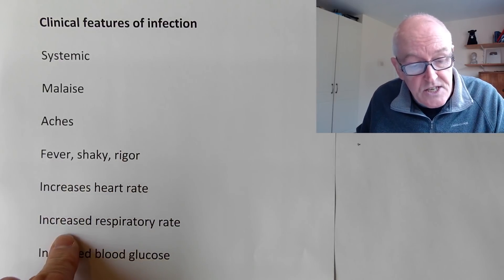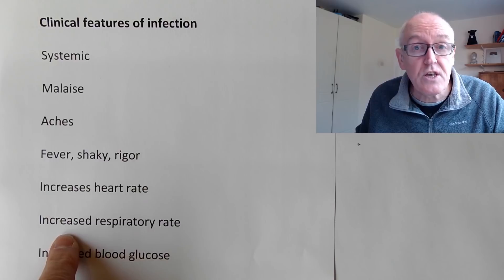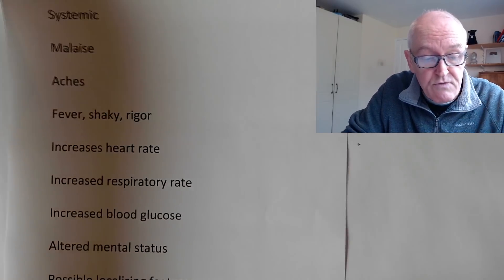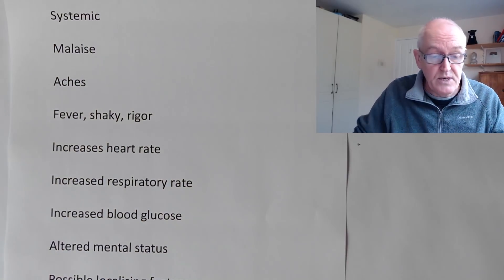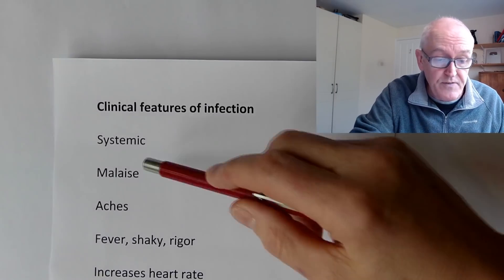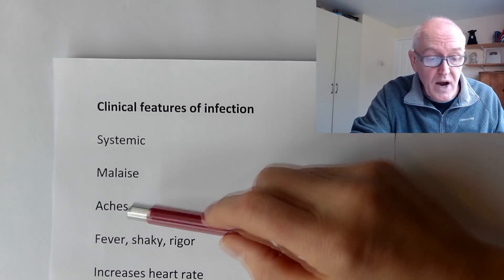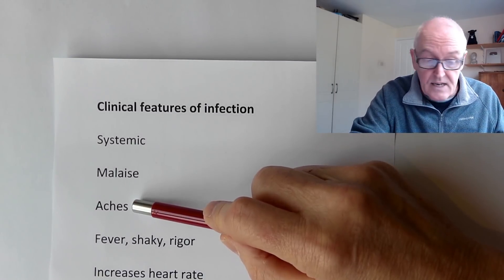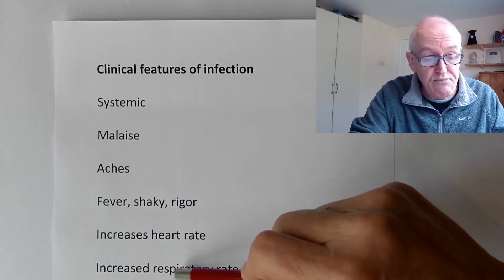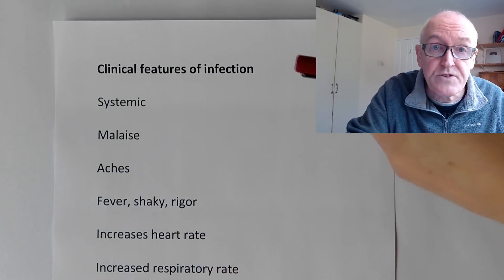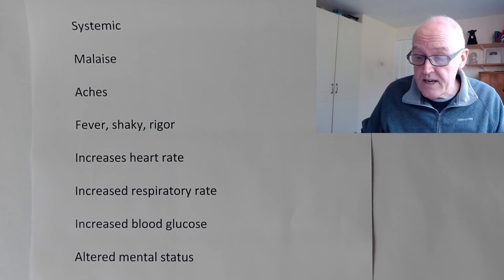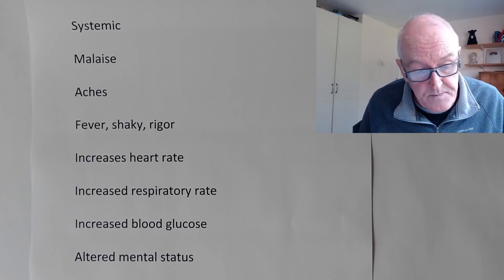Using energy also uses a lot of oxygen, so the breathing rate has to go up - the respiratory rate will increase. So far we notice that we don't feel well, we're achy, we have a fever, our heart is going faster than normal, and we're breathing faster than normal. All those things are indications of systemic infection.